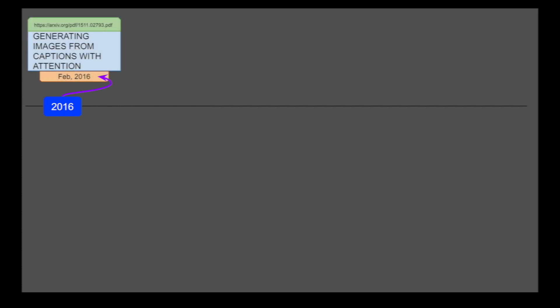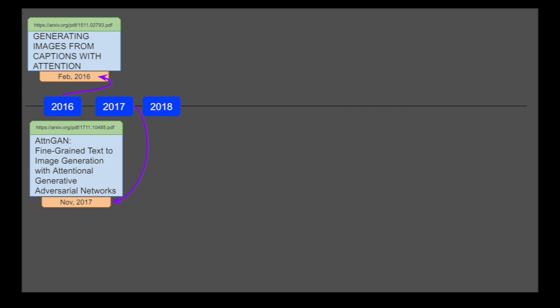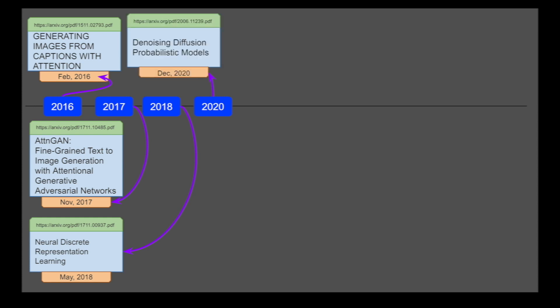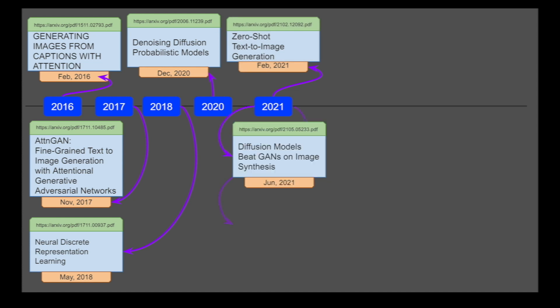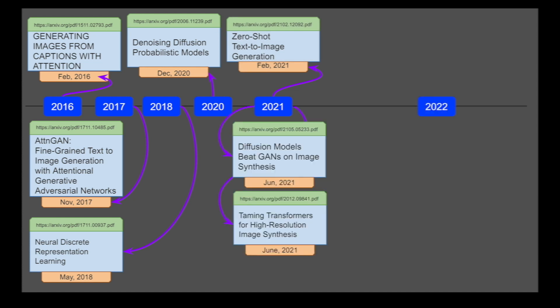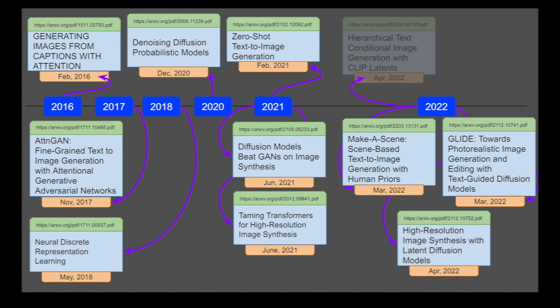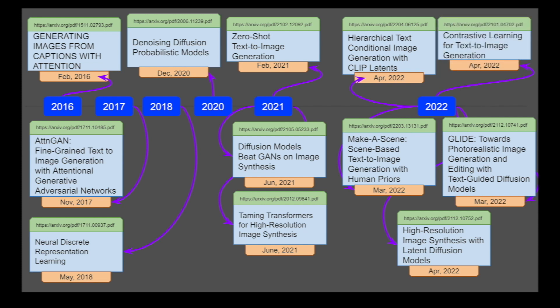This video covers the top 12 research papers related to text-to-image AI research, starting from 2016, a research paper from 2017, a research paper from 2018, and a research paper from 2020. After that, this video covers three different research papers from 2021, and in 2022 up to now, this video is going to discuss five very important research papers, all related to text-to-image AI research.